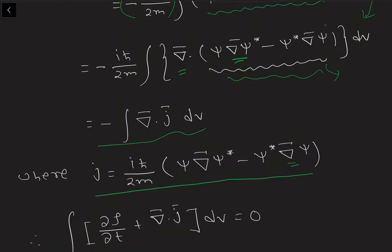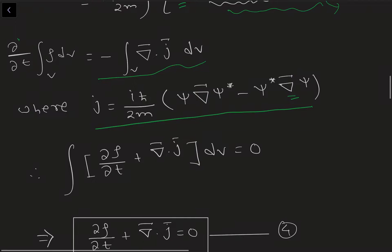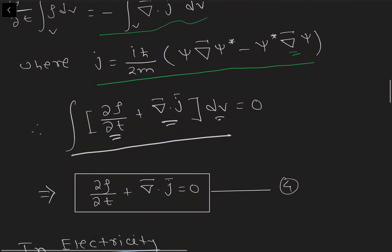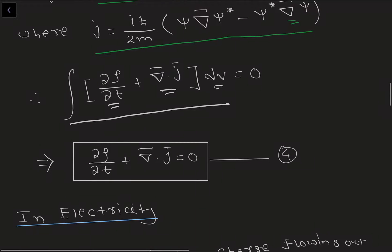We define J as (iℏ/2m)(psi ∇psi-star − psi-star ∇psi), so our equation becomes: del/del-t of the integral of rho dV equals minus the volume integral of divergence of J. We can therefore write del rho/dt plus divergence of J, all integrated over volume, equals zero. Since the volume dV is arbitrary, we can write this as the differential equation: del rho/del t + ∇·J = 0, which we call equation four.